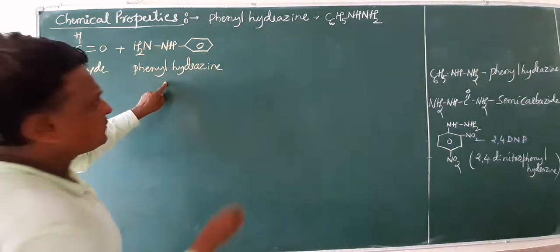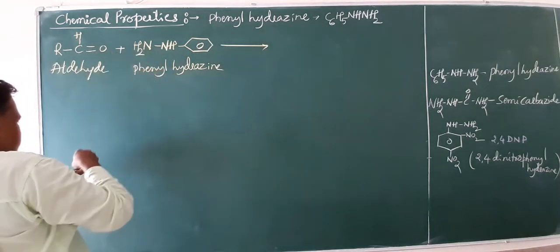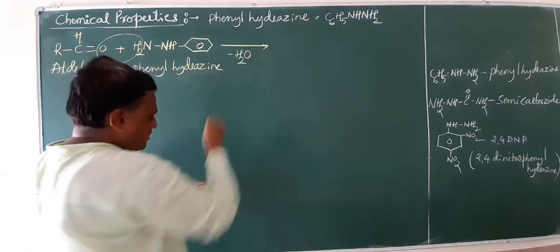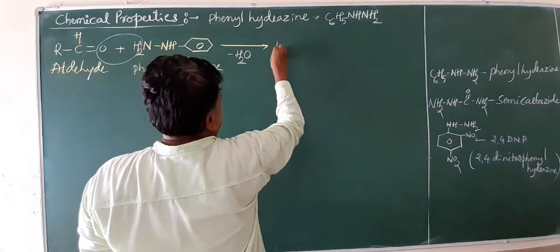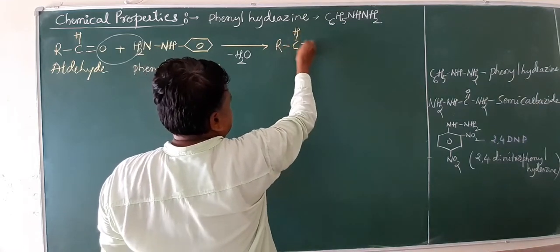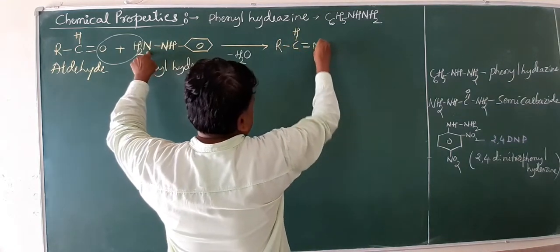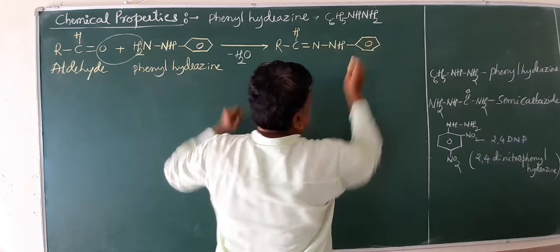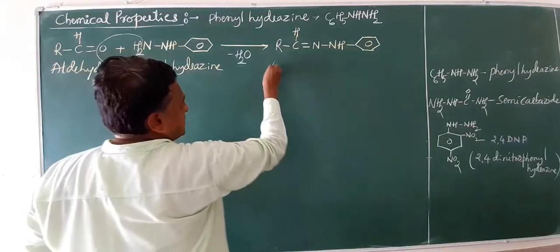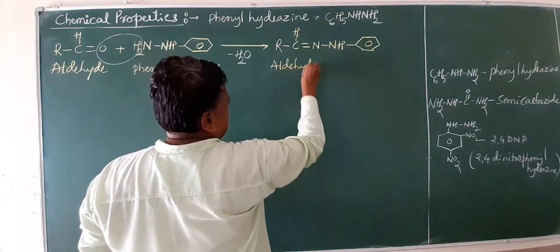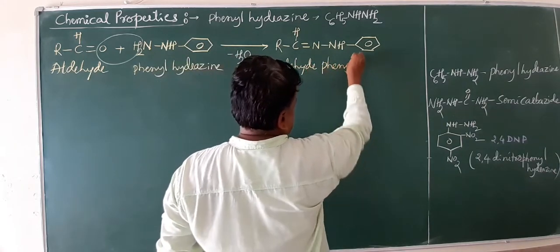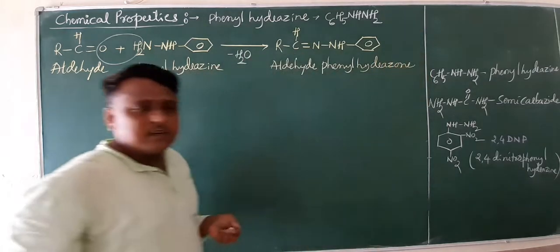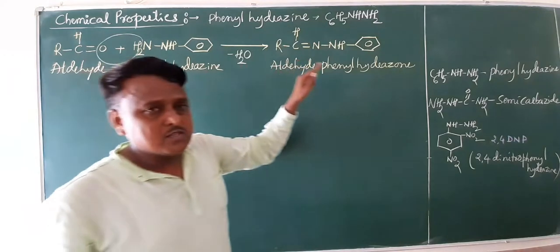When aldehyde reacts with phenyl hydrazine, condensation takes place with loss of water. The final product is R-CH=N-NH-C6H5. The name of this compound is aldehyde phenyl hydrazone. This is your general reaction.